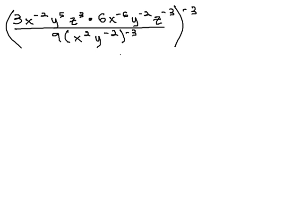Order of operations tells us to start inside the parentheses, and inside those parentheses, we'll first start with a power rule, taking that negative 3 through the smaller parentheses.